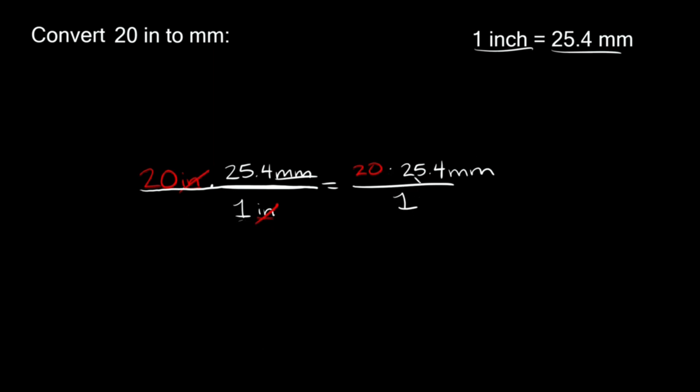20 times 25.4 equals 508. 508 divided by one is still 508. So that goes away. Remember we still have our units, millimeters, so don't forget to bring those over. So 20 inches equals 508 millimeters.